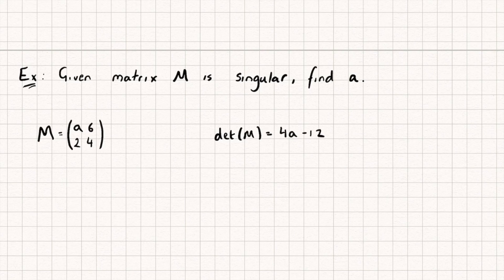Now remember what it means for a matrix to be singular. It means its determinant is equal to 0. So we can say, if M is singular, then the determinant of M, or we could even write it like this, the determinant of M is equal to 0.